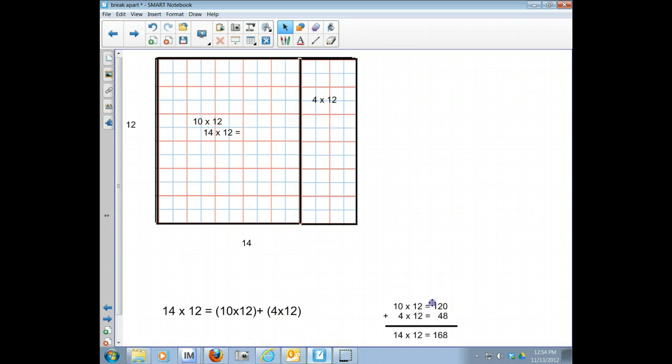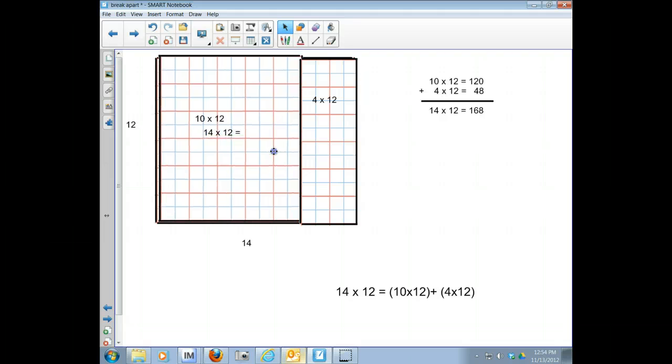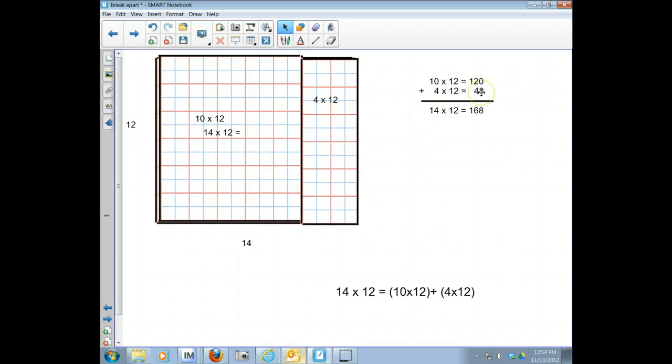So now the way that you write that with the equation, we've talked about two different ways. This way is an easy way to record your answer and keep track of what you're doing. You broke it into 10 times 12, right here that's the first equation, then you have the 4 times 12 which is the second equation, then we add them up to give us 14 times 12.